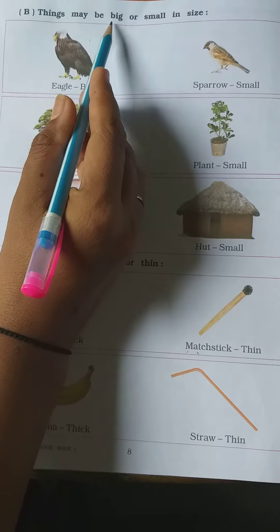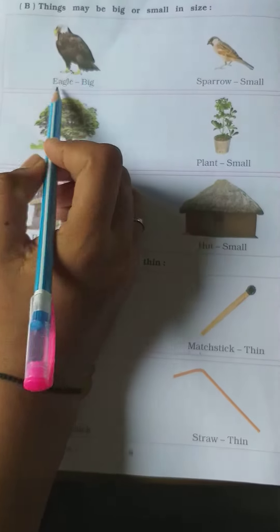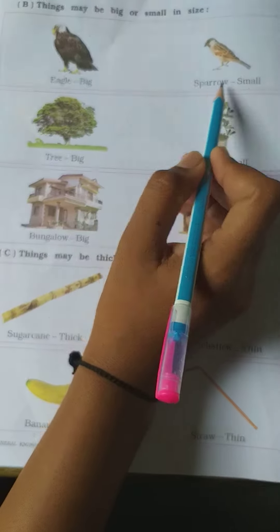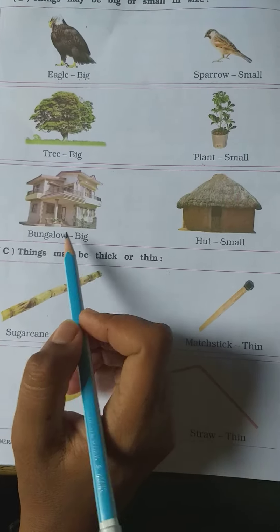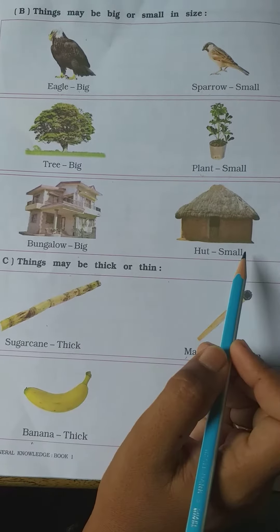B. Things may be big or small inside. Eagle is big, sparrow is small, tree is big, plant is small, bungalow is big, hut is small.